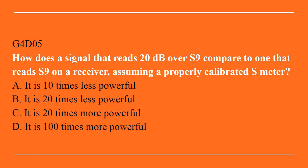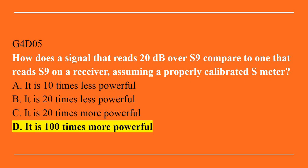G4D05: How does a signal that reads 20 dB over S9 compare to one that reads S9 on a receiver, assuming a properly calibrated S meter? A. It is 10 times less powerful. B. It is 20 times less powerful. C. It is 20 times more powerful. Or D. It is 100 times more powerful. The correct answer is D. It is 100 times more powerful.